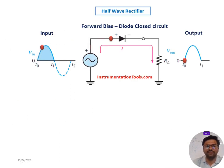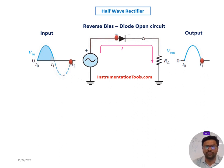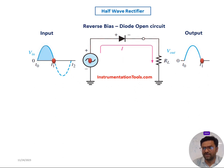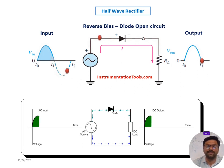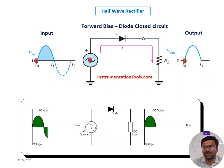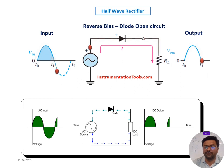We can understand this with an animated video. During the positive cycle, the diode is conducting and you are getting output voltage across the load. During the negative cycle, the diode is not conducting and you are not getting any output voltage across the load. This animation clearly demonstrates the concept of the half wave rectifier.